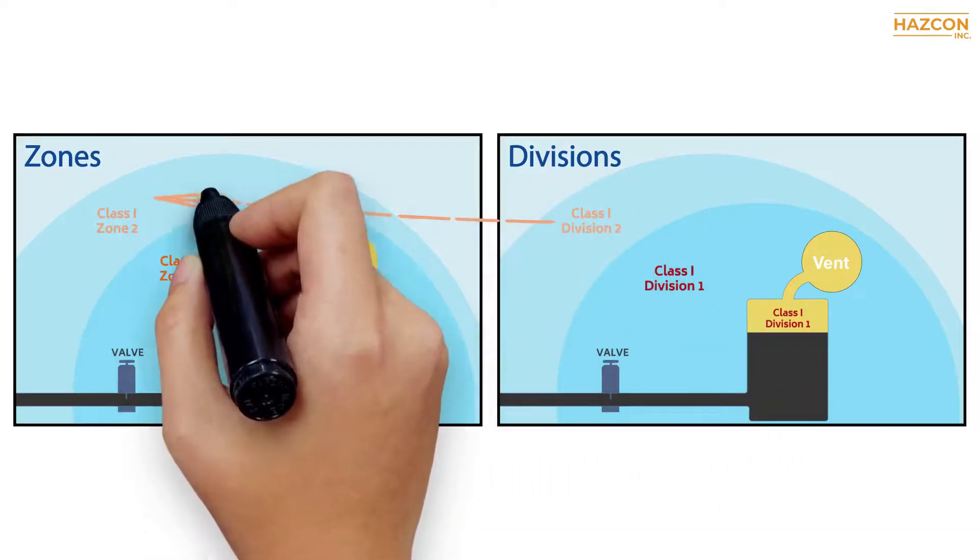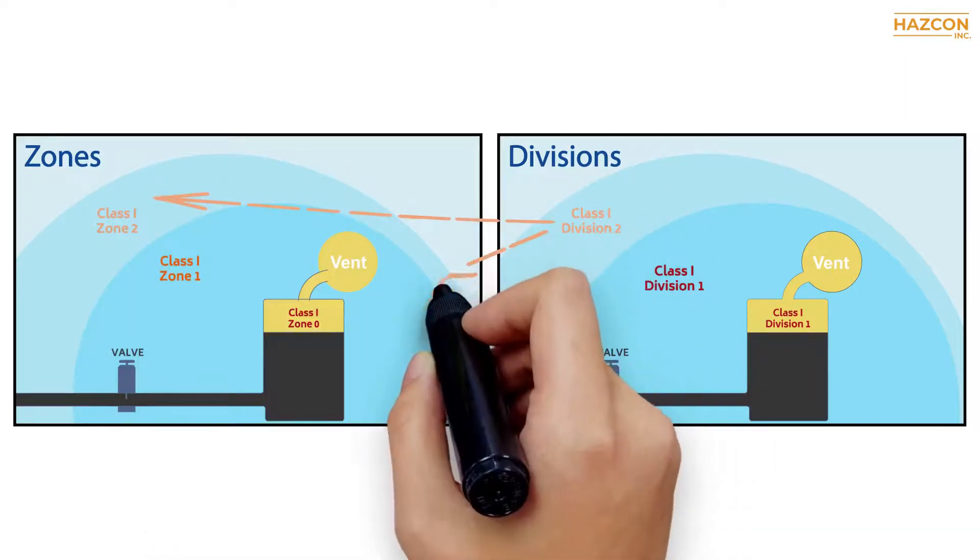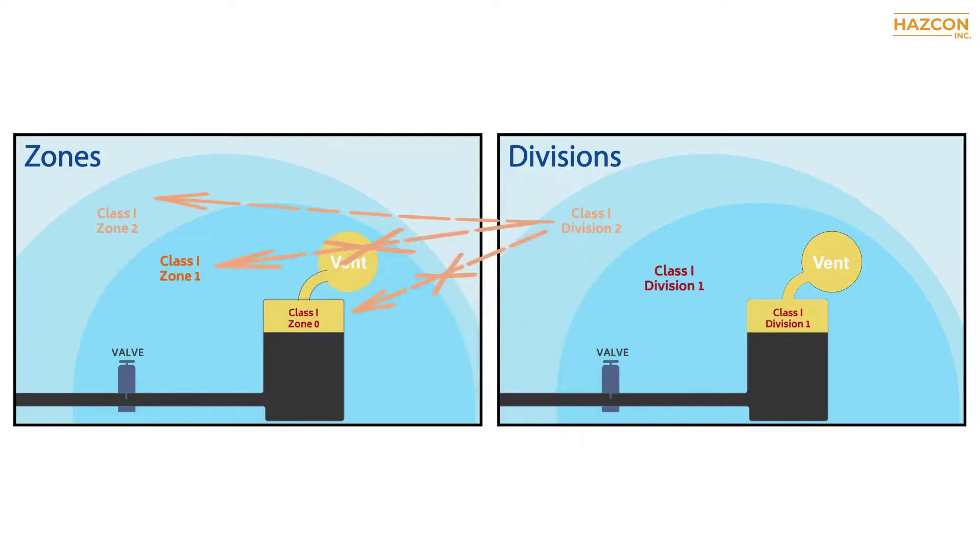Class 1 Division 2 products may be installed in zone 2, but may not be installed in zone 0 or zone 1. Class 1 Division 2 products may not be installed in class 1 Division 1 either.